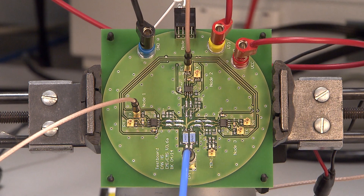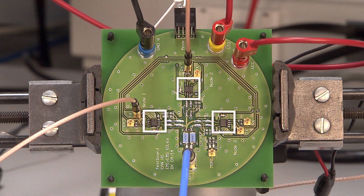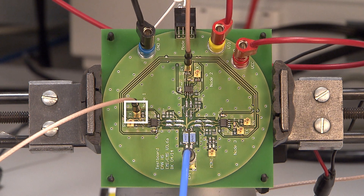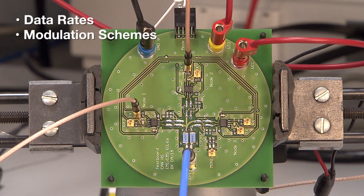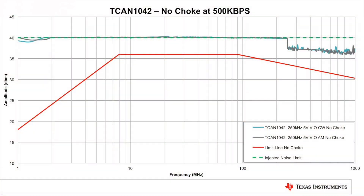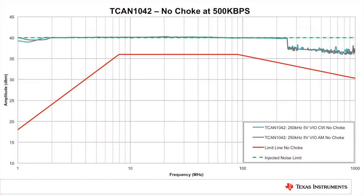Using the same test board as the third-party test house, which has three footprints for populating standard 8-pin CAN transceivers, a TXD input port, an RXD output port, and an RC coupling network for injecting RF noise, we have run a series of tests for different data rates, modulation schemes, and coupling networks. As you can see, the T-CAN 1042 passes the strict OEM requirements without the need for a common mode choke. The ability to remove the choke is an important distinction for the T-CAN 1042, which allows designers to reduce component and placement costs if desired.